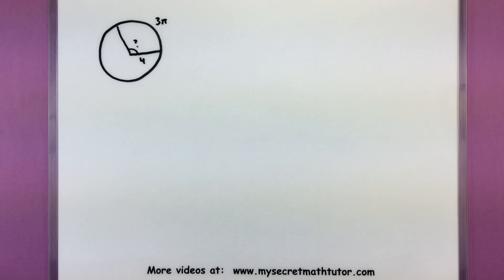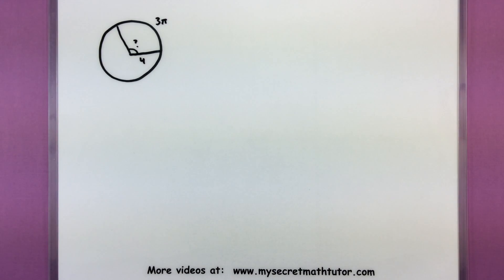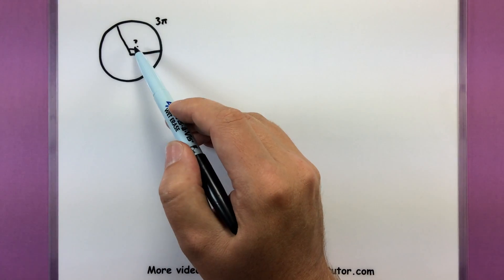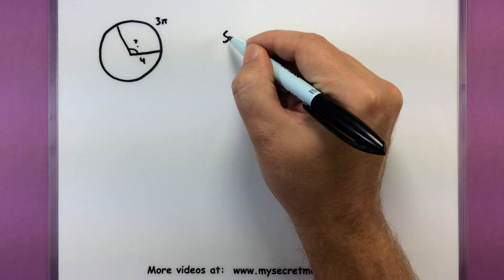So immediately if I try and jump into that formula, I'm missing some information. I'm missing the fact that I don't have that little angle. That's okay because the interior angle, this arc, and the radius are related with another formula.